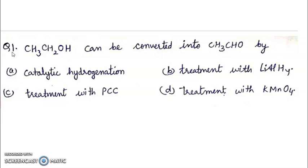Question 1: Ethanol can be converted into ethanal by: A. Catalytic hydrogenation, B. Treatment with lithium aluminium hydride, C. Treatment with PCC, D. Treatment with KMnO4. Right answer will be C, treatment with PCC. PCC is pyridinium chlorochromate. It converts alcohol to aldehydes.